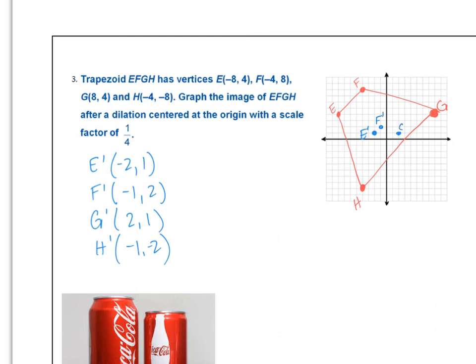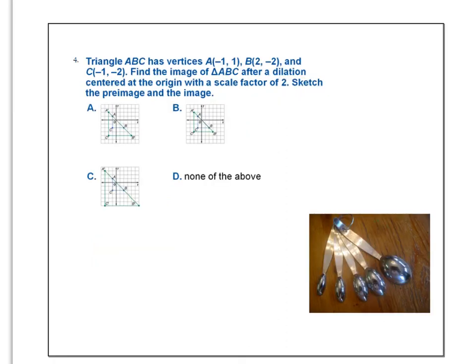And (-1,-2) here is H prime. Connect. And there it is our final image should look like it went through a size change with a scale factor of 1/4. It should have gotten smaller or shrunk. Notice how all these sides on the original are parallel to the corresponding sides on the final image. That is not a fluke, that will happen every time.